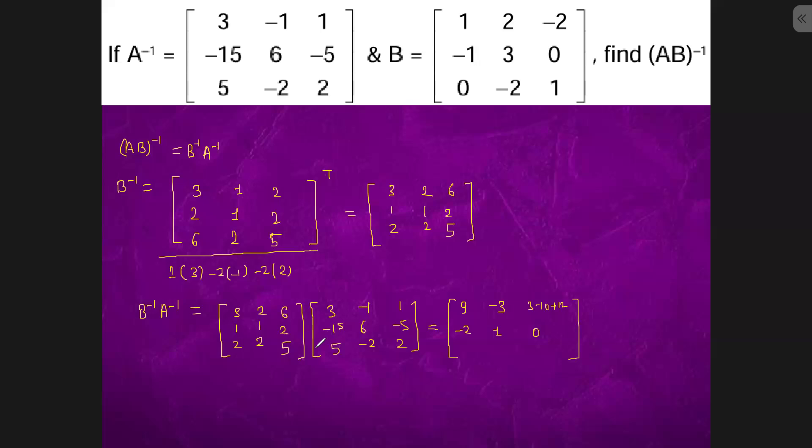6 minus 30 plus 25, it is 1. 6 minus 30, it is minus 24 plus 25 is 1. Minus 2 plus 12, 10, 10 minus 10, 0. 2 minus 10, 10, 2. This simply 9, minus 2, 1, minus 3, 1, 0, 5, 0, 2. This is the answer.